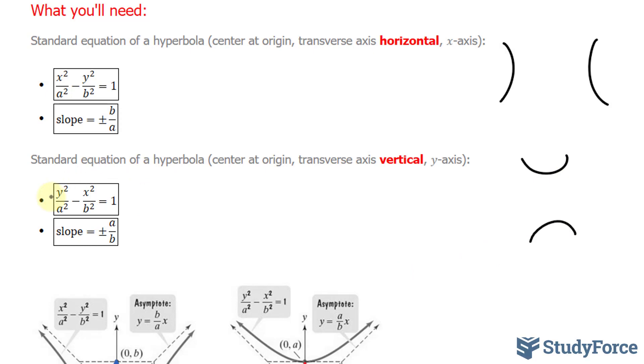Now, take a look at the difference between the two. In the first one where the transverse axis is horizontal, it is the y coordinate that is negative. In other words, it's this term that's negative. Whereas when it's vertical, it's the x term that's negative.